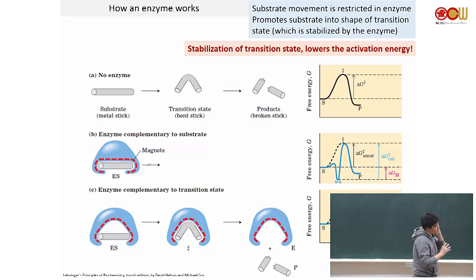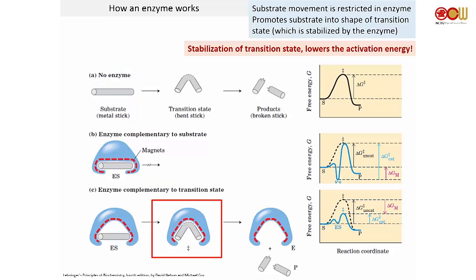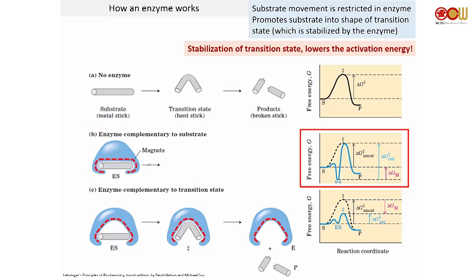One particular way enzymes work is by stabilizing something. What we see is: unreacted with no enzyme, and two theoretical enzymes — one is the enzyme binding to the substrate, and the other is the enzyme binding to the transition state. If the enzyme binds to the substrate, you stabilize the substrate. Looking at the energy diagram, initially the energy for the substrate is here, but then you stabilize the substrate by forming an enzyme-substrate complex, so it has lower energy — lower energy meaning more stable.